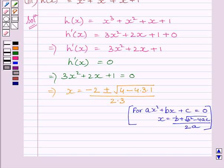Let us recall, if we are given an equation ax square plus bx plus c equals 0, then x is given by minus b plus minus under root b square minus 4ac upon 2a.